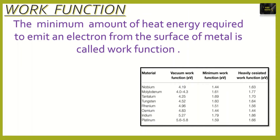Here is the work function of some materials with vacuum work function, minimum work function, and heavily saturated work function. Niobium has a vacuum work function of 4.19 eV, minimum work function of 1.44 eV, and heavily saturated work function of 1.63 eV. Molybdenum has a vacuum work function of 4.4 to 4.3 eV, minimum work function of 1.61 eV, and heavily saturated work function of 1.77 eV. Tantalum has a vacuum work function of 4.25 eV, minimum work function of 1.69 eV, and heavily saturated work function of 1.70 eV. Tungsten has a vacuum work function of 4.52 eV, minimum work function of 1.60 eV, and heavily saturated work function of 1.64 eV.